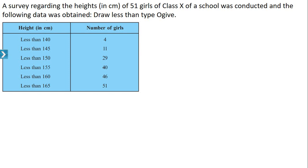Now observe this table. Here heights and number of girls are given. Here it is given as less than 140, less than 145 in the first column — it is given 'less than.' When 'less than' is given, the numbers in the next column will be their corresponding cumulative frequencies. These are not frequencies — these are cumulative frequencies. When less than or more than is given in the first column, the numbers in the next column are cumulative frequencies.